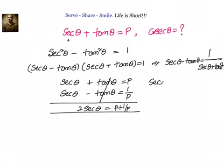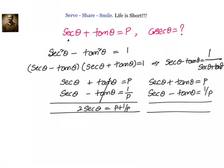We write down secant theta plus tan theta equals p, and this time we subtract to get secant theta minus tan theta equals 1 over p. The reason we do this is that cosecant theta is actually secant theta divided by tan theta. We can verify: 1 over cos theta, divided by sin theta over cos theta, gives 1 over sin theta, which equals cosecant theta.